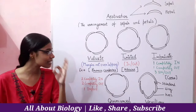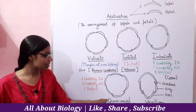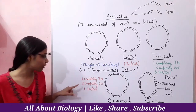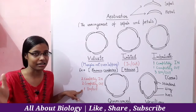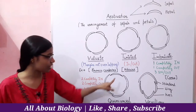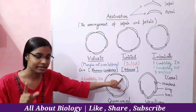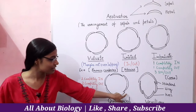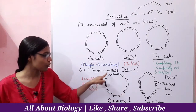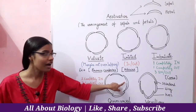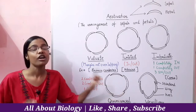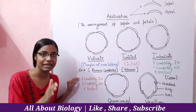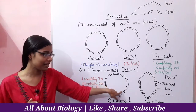Now let's talk about Quincuncial Estivation. In Quincuncial Estivation, two petals are completely inside, two petals are completely outside, and one petal is left with one margin on the inside and the other margin on the outside. As you can see, two margins of this petal are inside, two margins of another petal are outside, and the last petal has one edge inside and one outside.